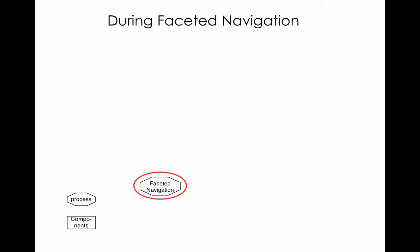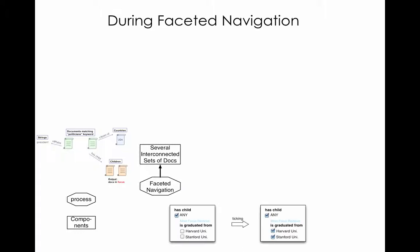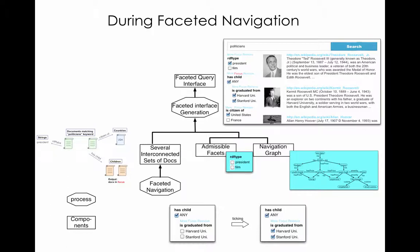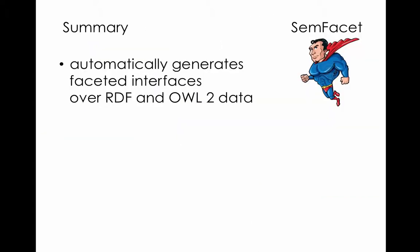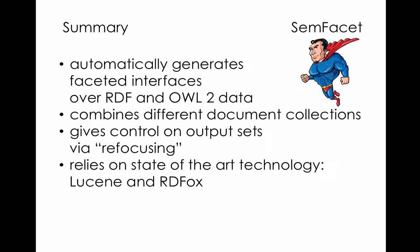Then, during the faceted navigation, when the user performs several selections in facets, the system keeps track of the set of interconnected documents that correspond to the current state of the user's query session. As soon as the user ticks a value in an available facet, SamFacet reacts. It takes the same set of admissible facets and the navigation graph, and it generates a new faceted query interface that reflects the selection of the user. Moreover, SamFacet updates the set of interconnected documents. To conclude, SamFacet allows for automatic generation of faceted search interfaces over RDF and OWL2 data. It allows combining several collections of documents. It gives control on which document set should go in the output via the refocusing mechanism. SamFacet relies on state-of-the-art semantic web technology for keyword-based search, querying RDF data, and reasoning over RDF and OWL2 ontologies.